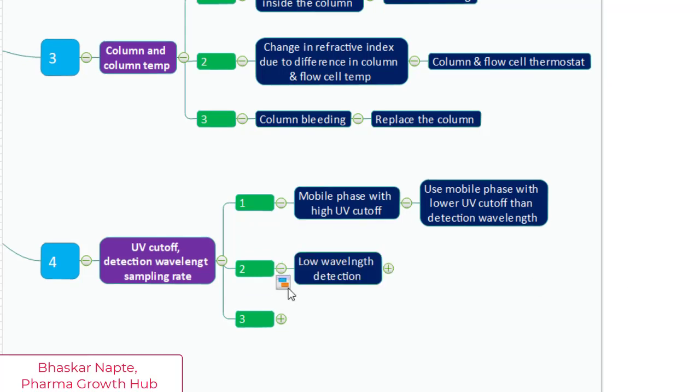The second point is about low wavelength detection. In UV detection, the lower wavelength results in more noise. You must have seen that. So wherever possible, the selection of a higher wavelength can be selected because it reduces the baseline noise. The higher wavelength generates lower noise as compared to the lower wavelength. For example, if the compound has a lambda max at 210 nanometers and 250 nanometers,